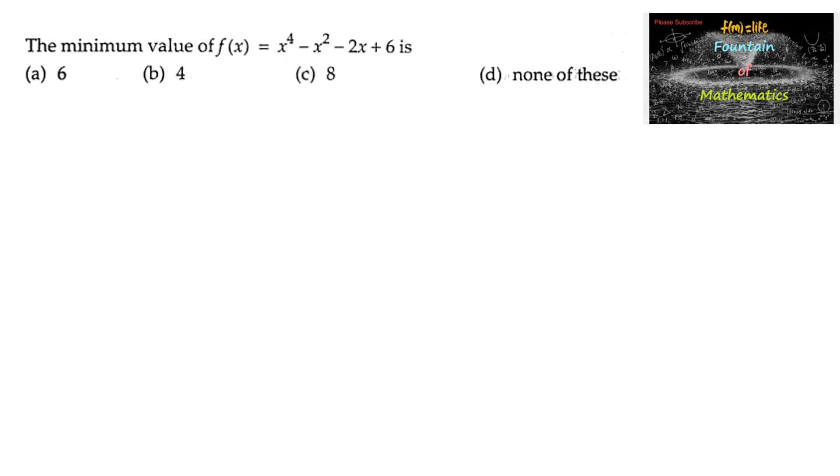The minimum value of the function f(x) is equal to x to the power 4 minus x squared minus 2x plus 6. For minima or maxima we can say f'(x) is equal to 0.